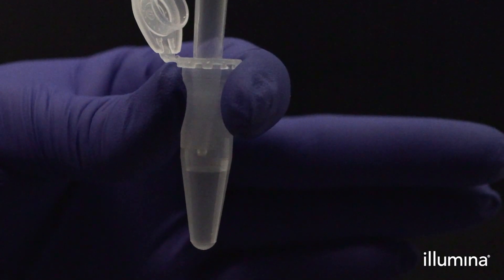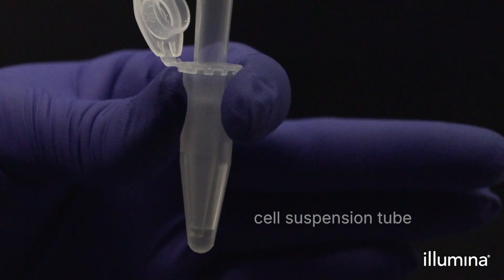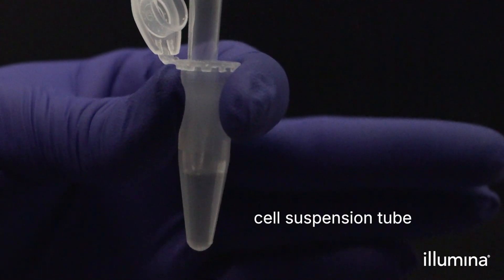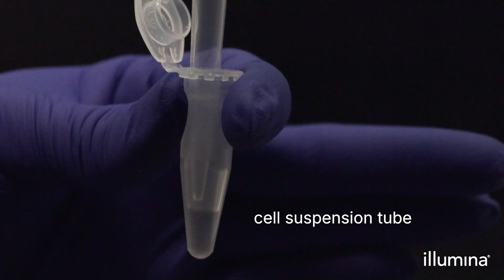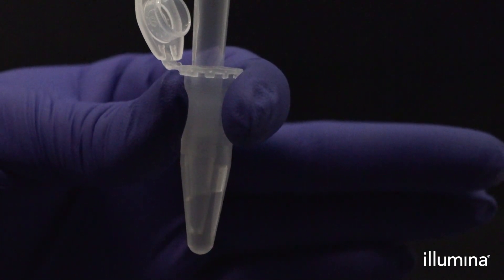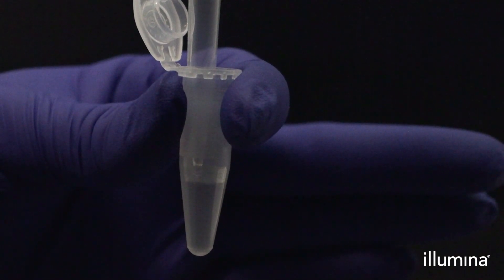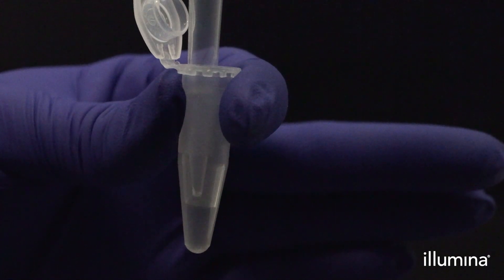First, gently pipette mix your cell or nuclei suspension 10 times with a wide-bore P200 pipette tip. The cell or nuclei suspension should be freshly mixed before transferring into the PIPs to prevent settling from impacting your sample loading.